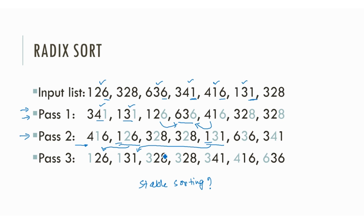We have many choices for a stable sorting algorithm. However, Radix Sort is a linear time sorting algorithm, so it prefers any linear time stable sorting algorithm for every round. Thus, using counting sort is very common with Radix Sort. Thank you all.